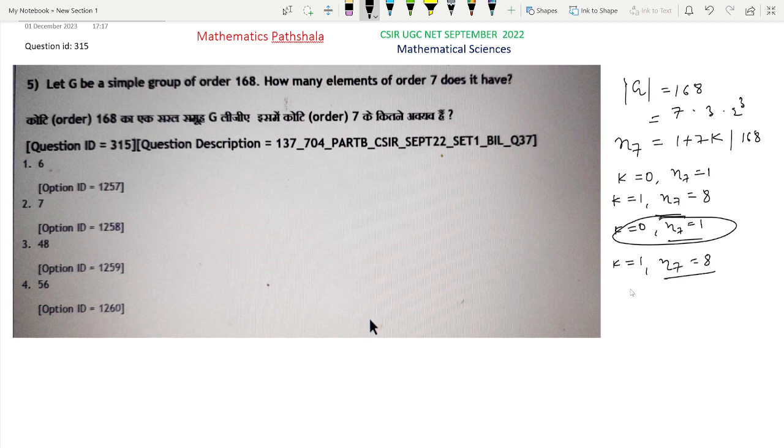That means there are 8 Sylow 7-subgroups, and each subgroup is of order 7. Suppose H1, H2, up to H8 are the Sylow 7-subgroups, and the order of each is 7. These are exactly the 8 Sylow 7-subgroups, and there will be no other subgroup of order 7, because if there is any other subgroup of order 7, it will be one of these HI. So these are exactly the subgroups of order 7.